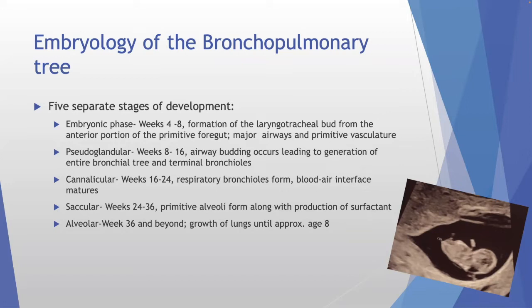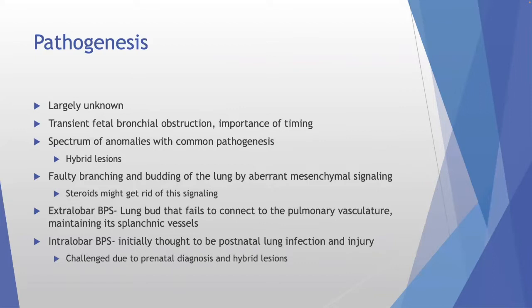The pathogenesis of lung lesions is largely unknown but thought to involve transient fetal bronchial obstruction. The timing of that obstruction matters — it's a spectrum of anomalies with a common pathogenesis. We see hybrid lesions like CPAM-BPS mixtures. Many CPAMs have associated bronchial atresia, suggesting they're all part of a big spectrum. Faulty branching and budding from aberrant mesenchymal signaling is proposed. Steroids can help — they're given for premature babies and for severe congenital lung lesions with hydrops.